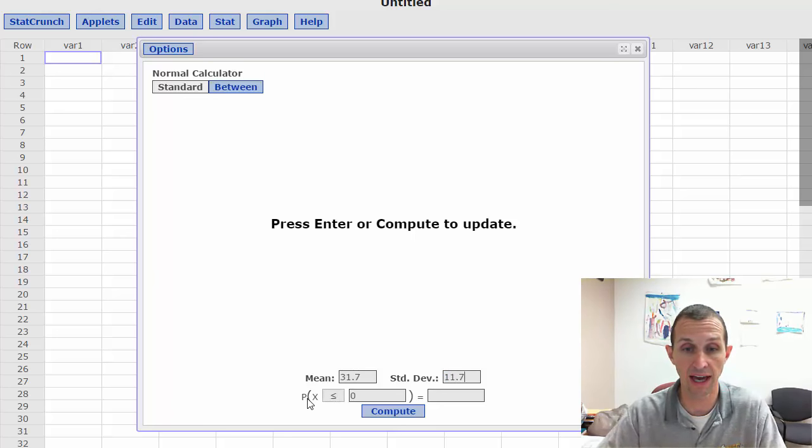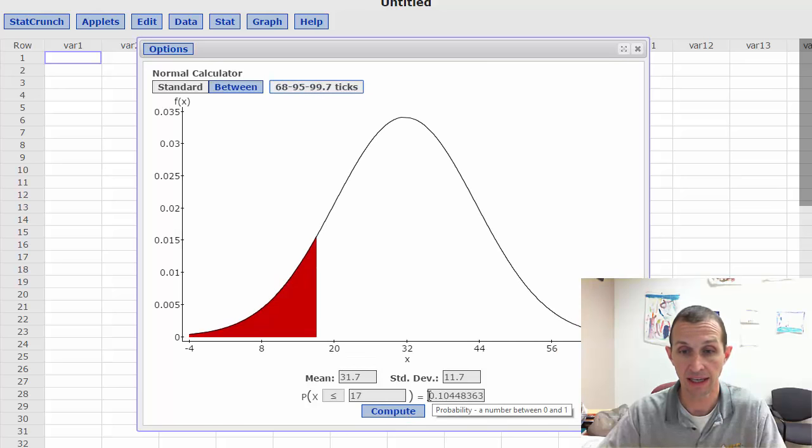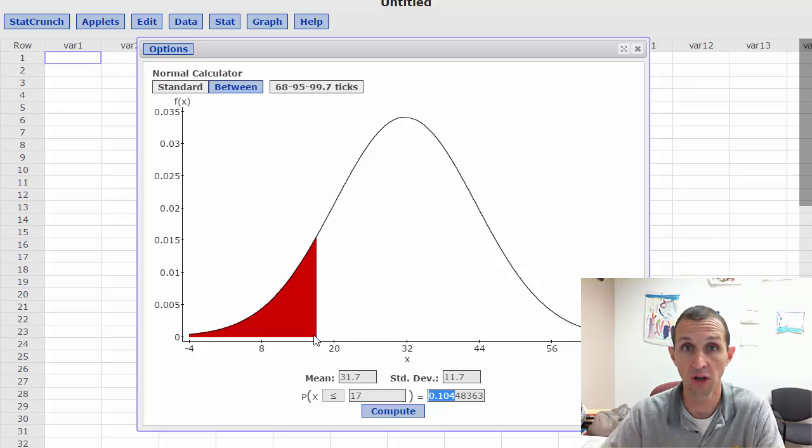And so what we want to look at is the probability, that capital P right there, of observed values, that's the x, being less than 17 years old. And so by filling in these three boxes and leaving this one open when I click compute what you'll actually see is the probability here. If I hover over it will actually say probability of less than 17 and they've got it shaded in so you can see the shading right here. So you can see it's a little more than one standard deviation away so not terribly unlikely.